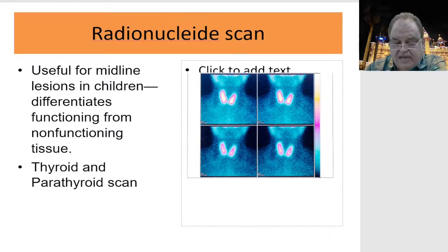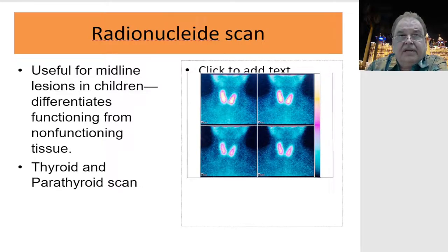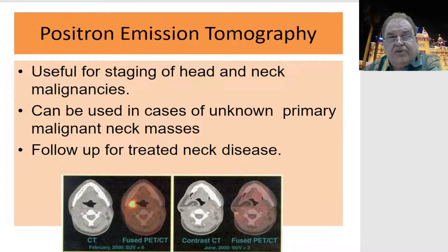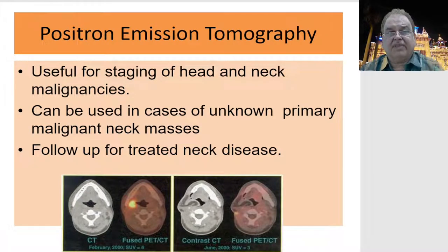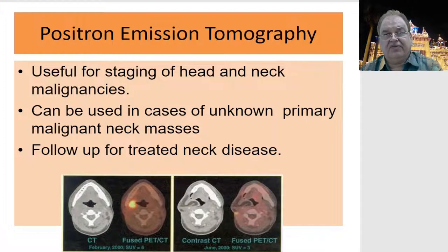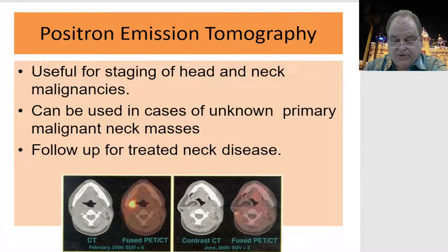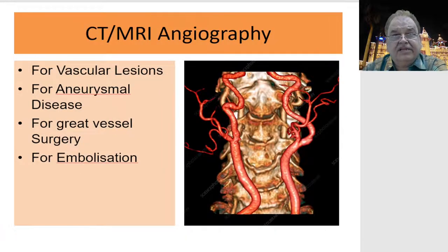Radionuclide scan differentiates between functioning and non-functioning tissue and can be applied for thyroid and parathyroid swellings. Positron emission tomography (PET) is good for staging of head and neck malignancies, can be used in cases of unknown primary malignant neck masses, and is especially important for follow-up to detect metastasis.